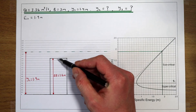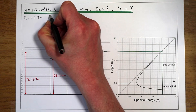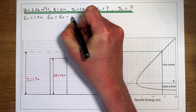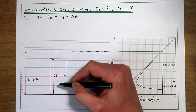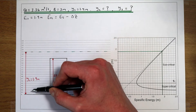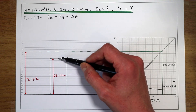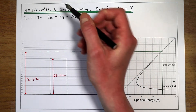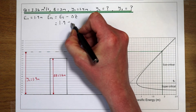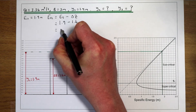Next we want to work out the specific energy at point number 2 — above this obstruction in the flow. The specific energy at 2 is going to be the specific energy at 1 minus the energy lost due to this change in elevation. Specific energy is energy relative to the base of the flow, so at point 1 we have more specific energy than point 2 because some portion of the flow has had its energy translated into potential energy by the obstruction. The specific energy at 1 is 1.9 metres and the height of the obstruction is 1.6 metres, giving us a new specific energy of 0.3 metres.